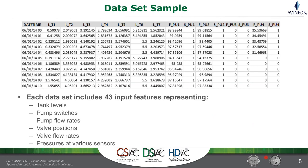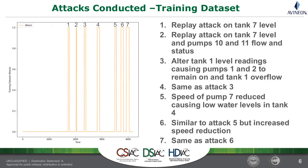There were two datasets with attacks. In the first one, which we call the training dataset, there were seven attacks of a variety of types you might see against an industrial control system — a replay attack, alterations to tank level readings, and reductions in pump speeds. The orange line, when it goes up, indicates each of the attacks, and you'll see this representation used later on.